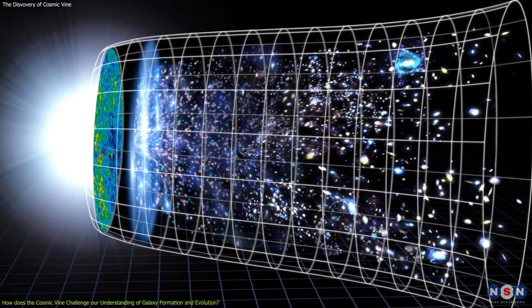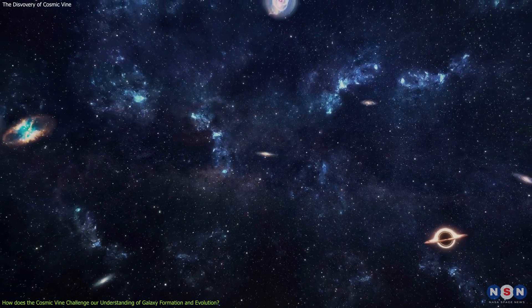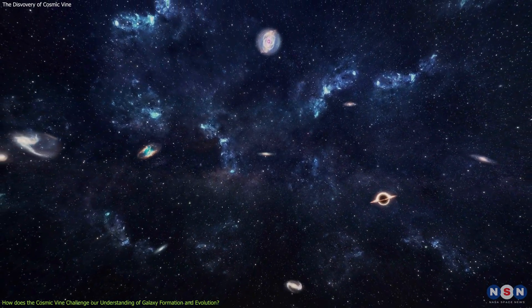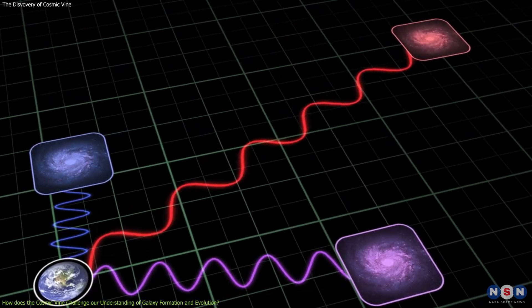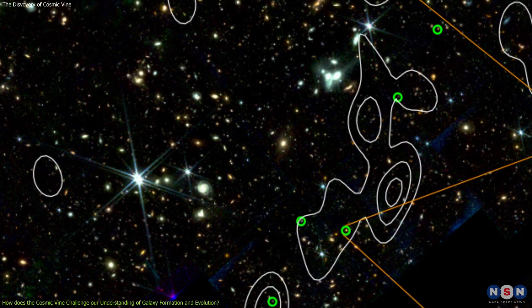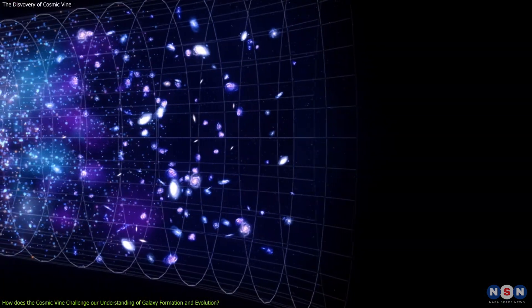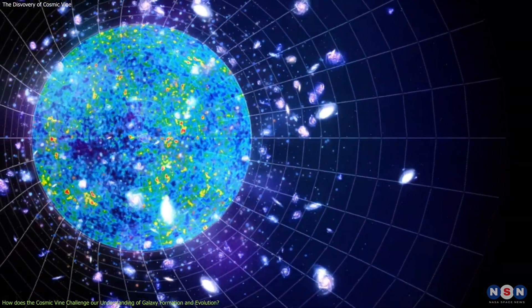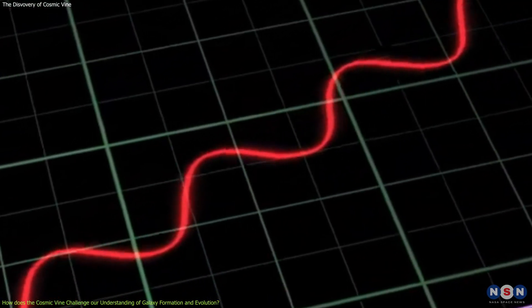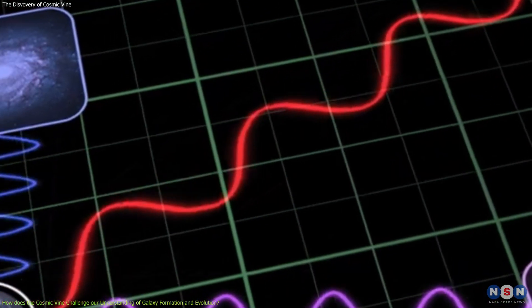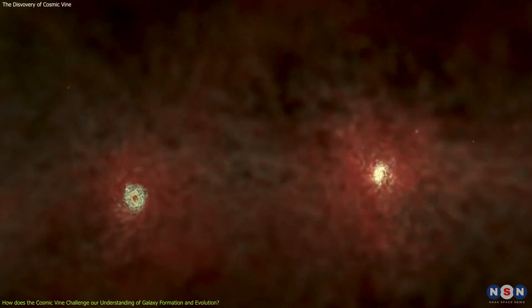However, the Lambda Cold Dark Matter model also faces some difficulties and limitations in explaining some of the observations of the small-scale structure of the universe, such as the properties and evolution of individual galaxies, especially at high redshifts. The cosmic vine is one of these difficulties, as it challenges some of the assumptions and predictions of the Lambda Cold Dark Matter model. For example, this model predicts that the large-scale structures at high redshifts should be less massive and less complex than those at low redshifts, due to the limited time and space available for their formation and growth.